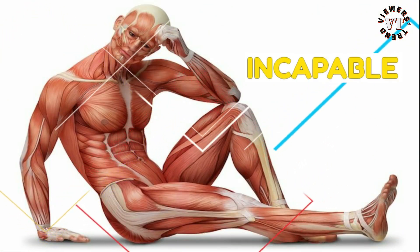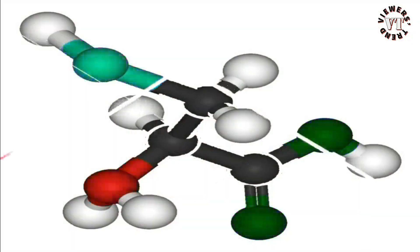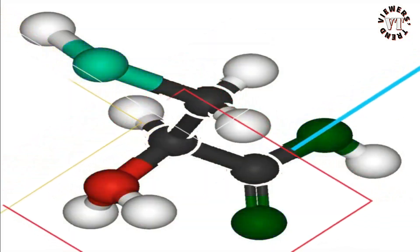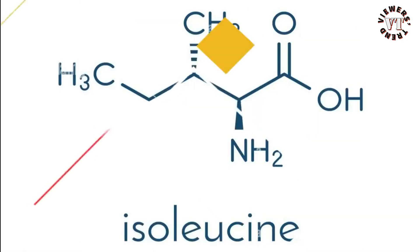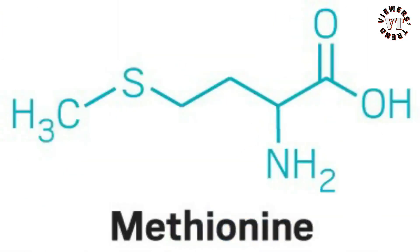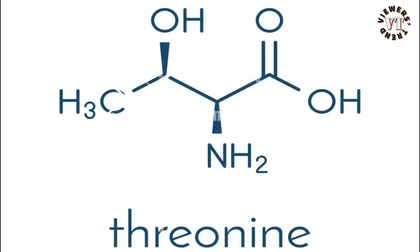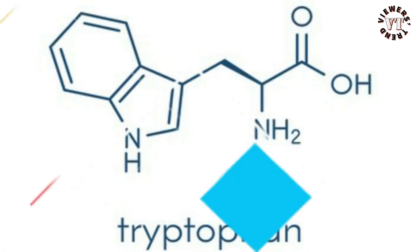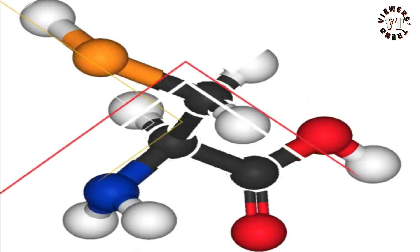The body is incapable of producing essential amino acids. As a result, they must be derived from food. Histidine, isoleucine, leucine, lysine, methionine, phenylalanine, threonine, tryptophan, and valine are the nine essential amino acids.